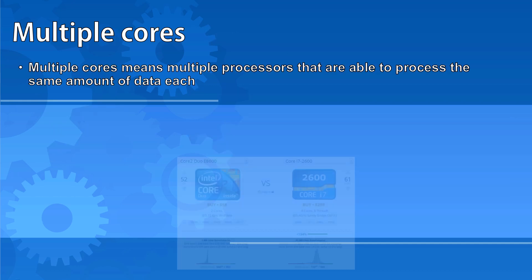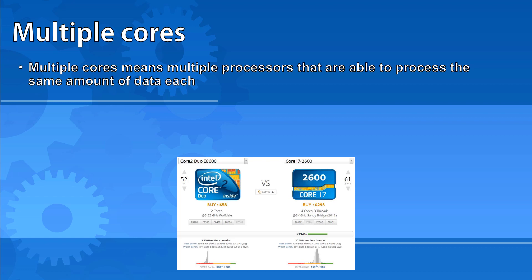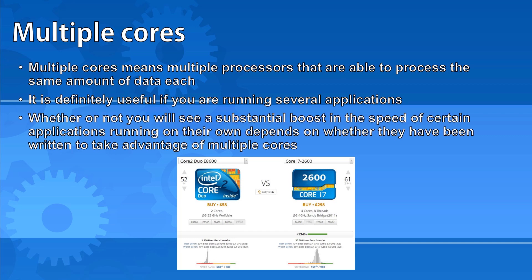Multiple cores means multiple processors that are able to process data simultaneously. It's quite common in modern computers to see dual core and quad core computers, which have two and four cores respectively. Having multiple cores is definitely useful if you regularly run several applications at the same time, but whether you see a substantial boost in speed for certain applications depends on whether they have been written to take advantage of multiple cores. It's more difficult to write a program that takes advantage of multiple cores.